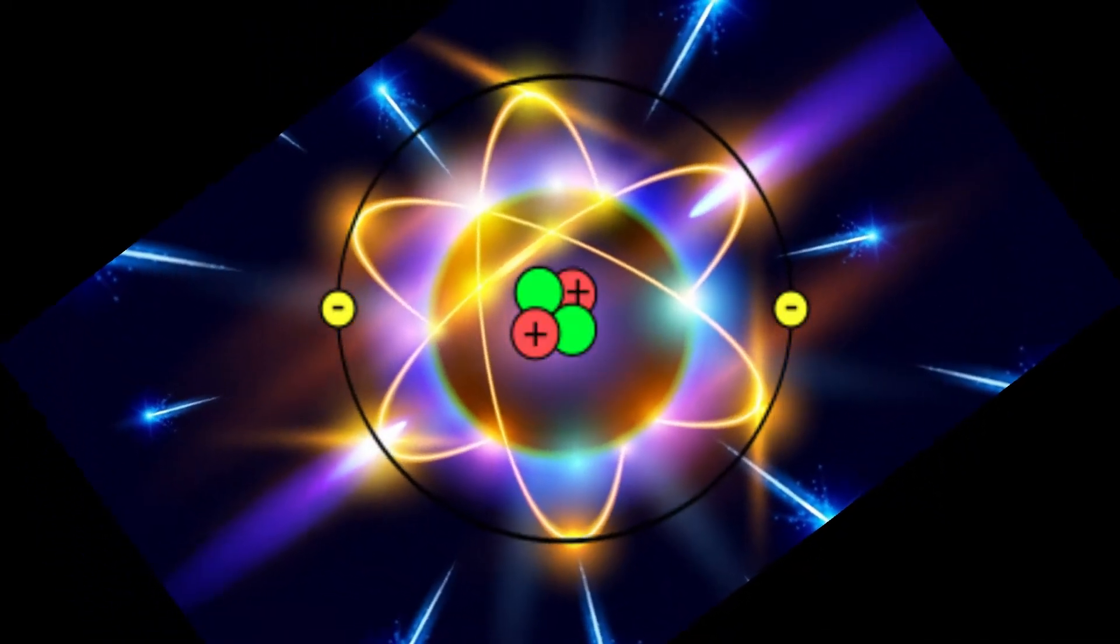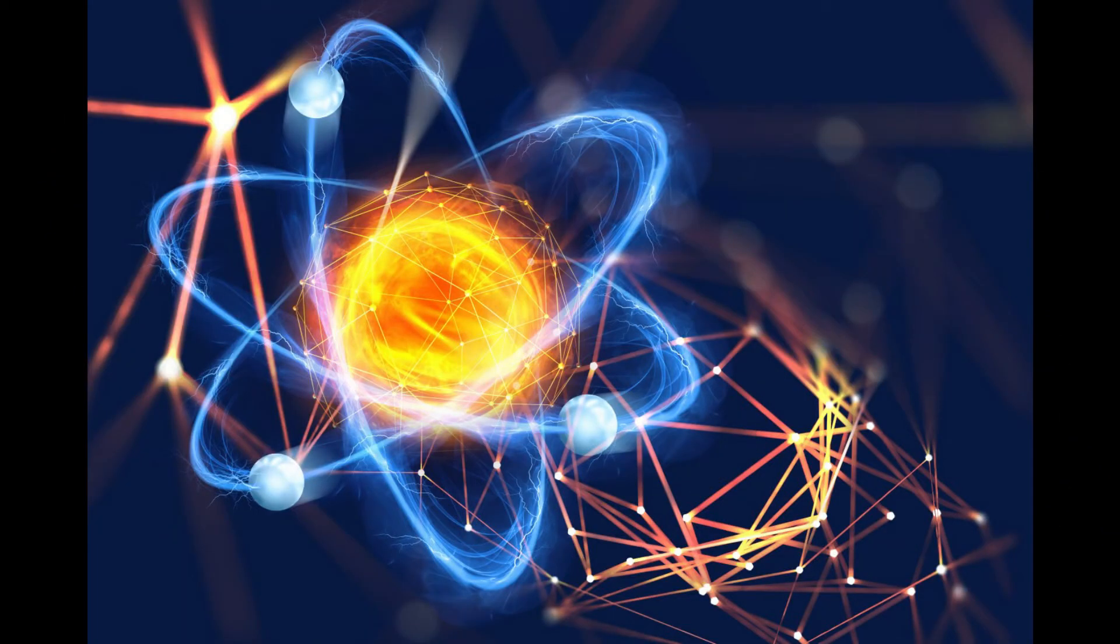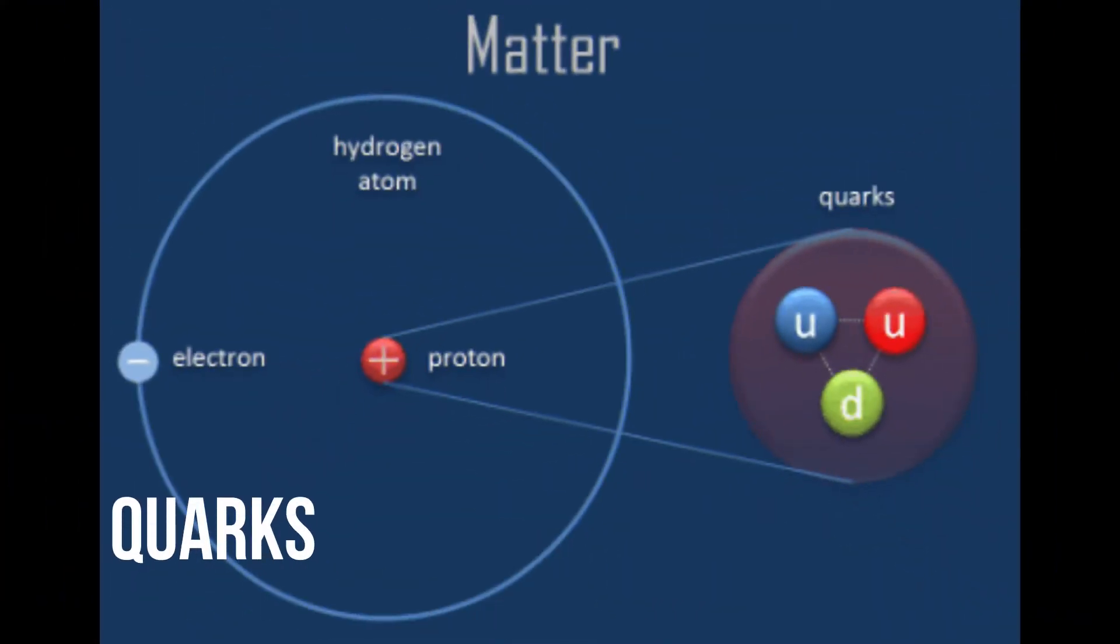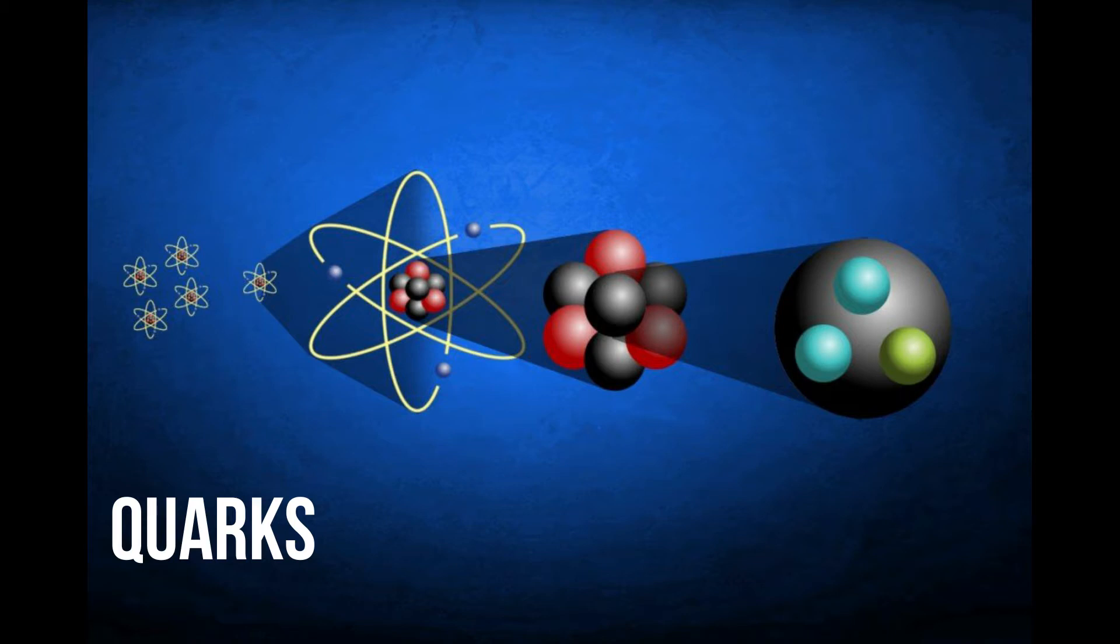Electrons are extremely lightweight, have negative charge, and exist in a cloud orbiting the nucleus. The electron cloud has a radius 10,000 times greater than the nucleus. The protons, electrons, and neutrons are composed of even smaller particles, such as quarks.